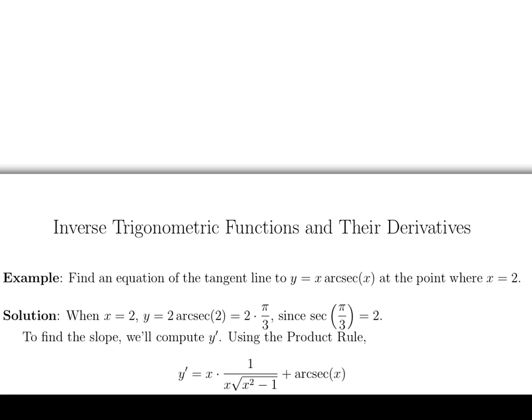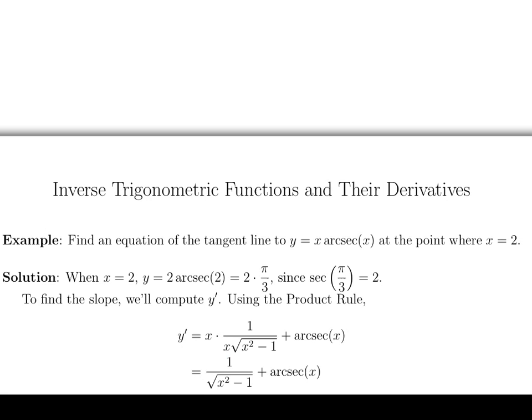Now we can clean this up just a little bit. These x's here are going to cancel. And so we end up with this for our derivative, 1 over square root of x squared minus 1 plus arc secant of x.